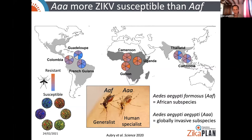So it looks like Aedes aegypti formosus, the African subspecies, is more resistant to Zika virus infection — regardless of the virus strain — than the Aedes aegypti globally invasive subspecies.